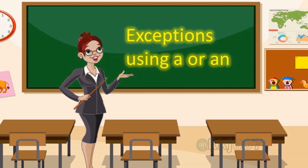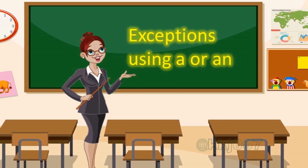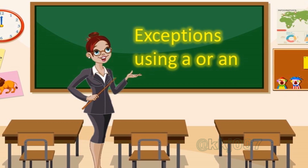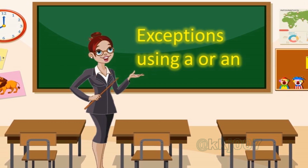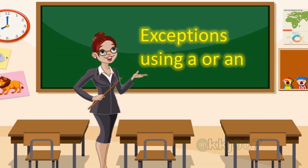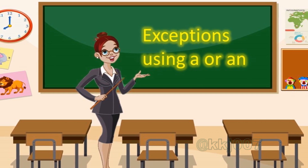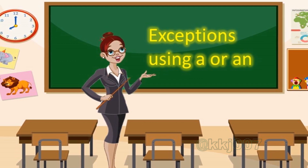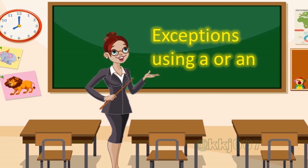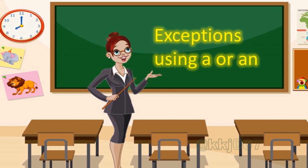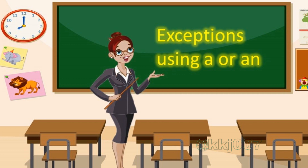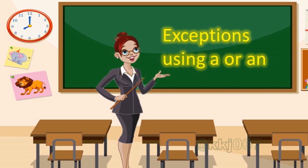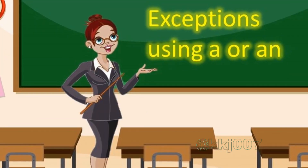There are a few exceptions to the general rule of using 'a' before words that start with consonants and 'an' before words that begin with vowels. The first letter of the word 'honor', for example, is a consonant, but it's unpronounceable. Despite its spelling, the word 'honor' begins with a vowel sound. Therefore, we use 'an'. It is incorrect to say: my mother is a honest woman. The correct way to say is: my mother is an honest woman.